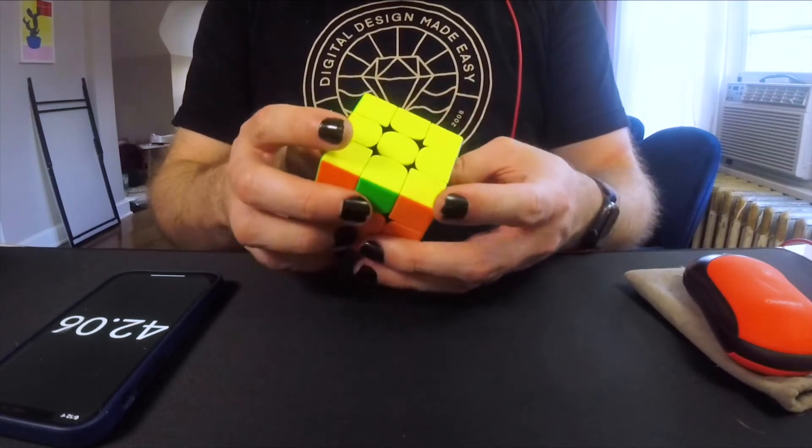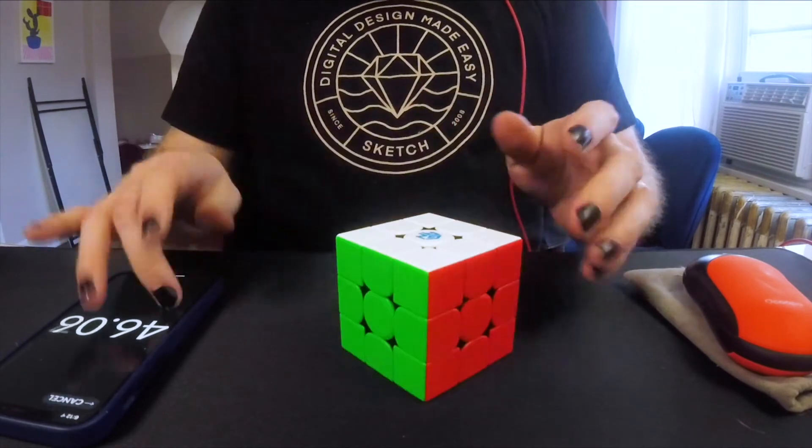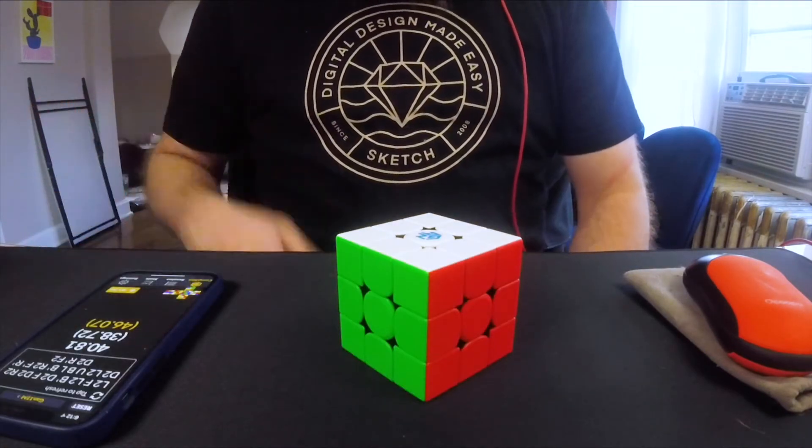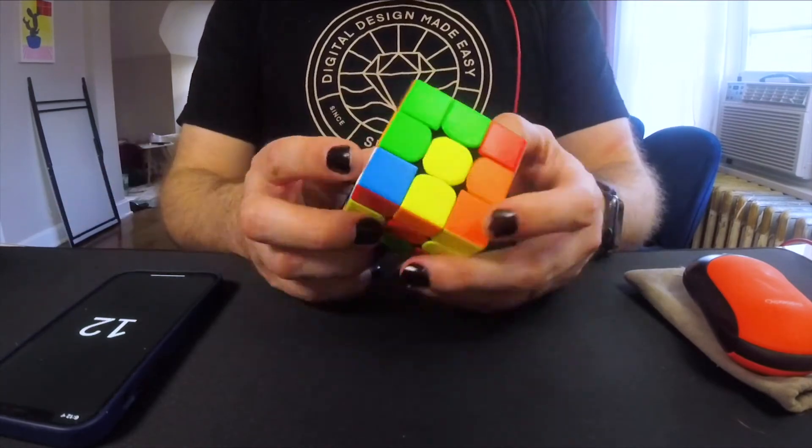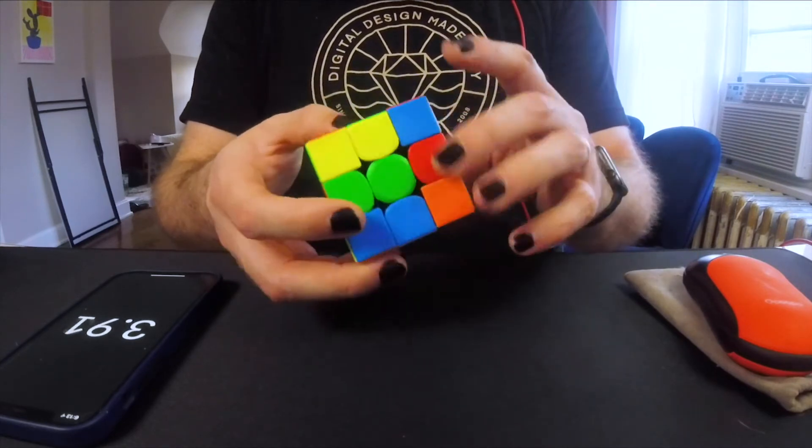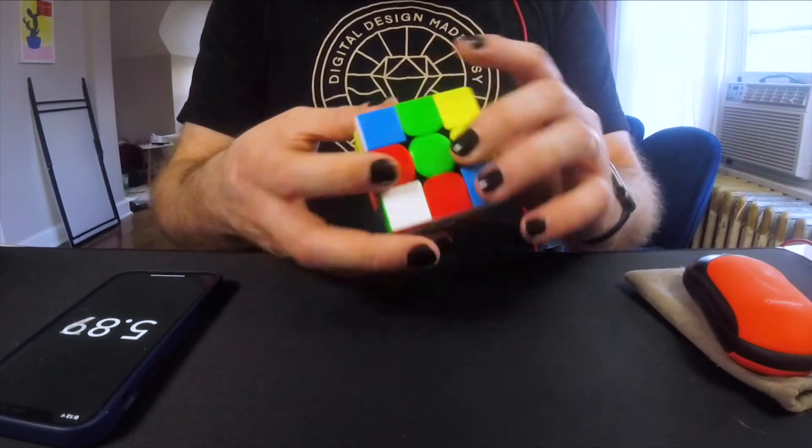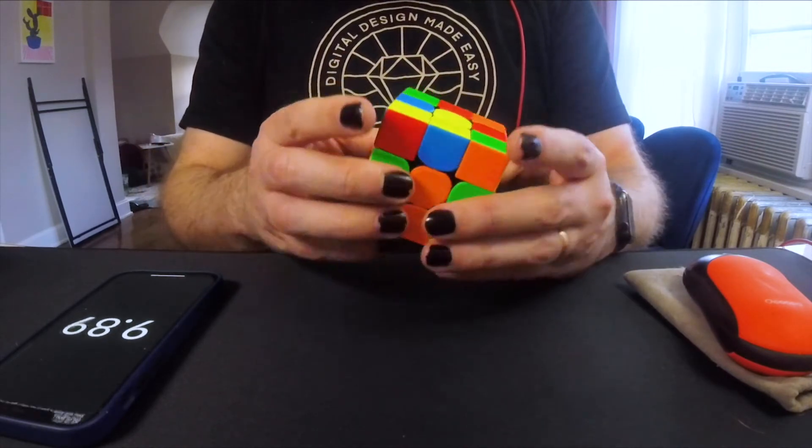I'm also learning things like the Pyraminx and Skewb but the overlap between that and the 3x3 is much less. They have some of the same algorithms you know on the Skewb you're sledgehammering a lot and the same with Pyraminx but getting better at those has not drastically affected my 3x3 solving either in the positive or the negative.